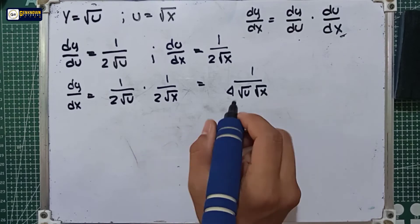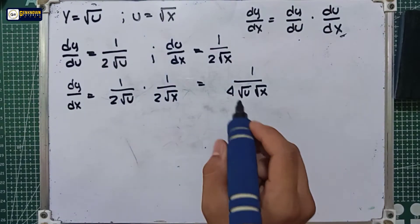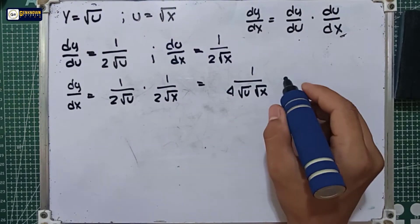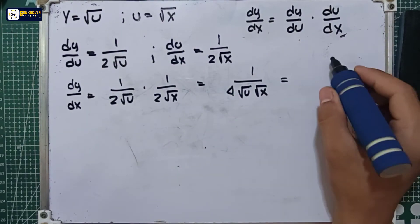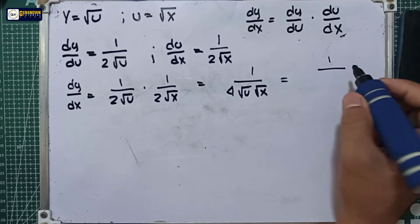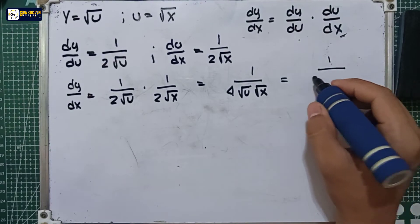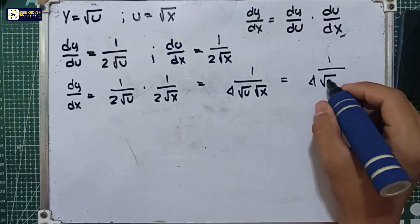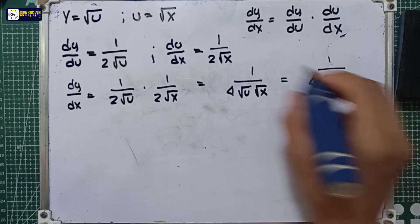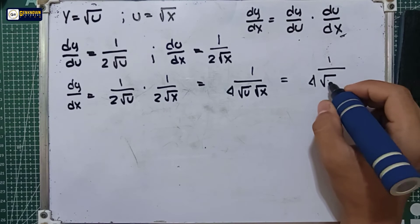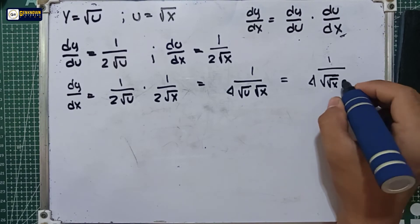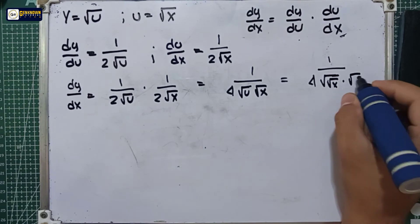Since our u is equal to the square root of x, we will substitute that in. So we will have 1 over 4, square root of — where u is equal to the square root of x — multiplied by the square root of x.